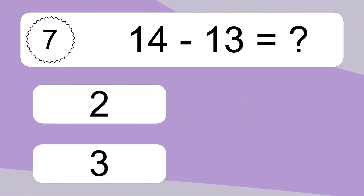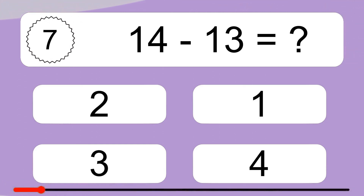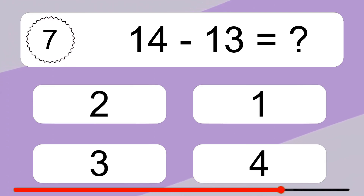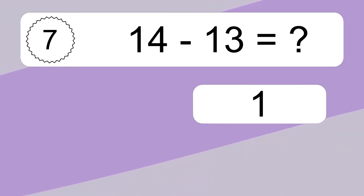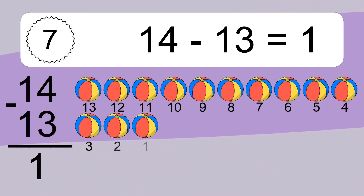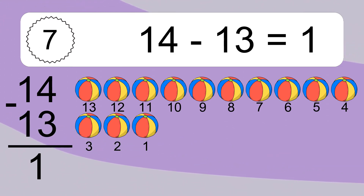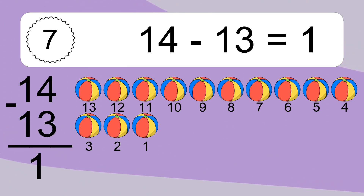14 minus 13 equals what? 14 minus 13 equals 1. Let's count it: 13, 12, 11, 10, 9, 8, 7, 6, 5, 4, 3, 2, 1.